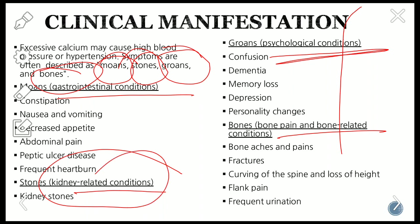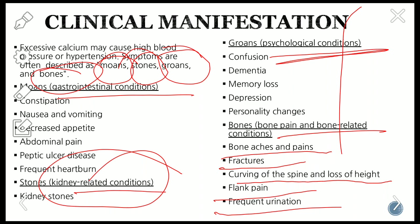Stones refers to kidney-related stones due to excessive mobilization of calcium from the bone. Groans refers to psychological disturbances in the form of confusion, dementia, memory loss, depression, and personality changes. Bones refers to bone pain and bone-related conditions like bone aches and pains, fractures, curving of the spine, loss of height, flank pain, and urgent urination.